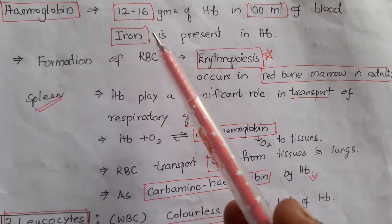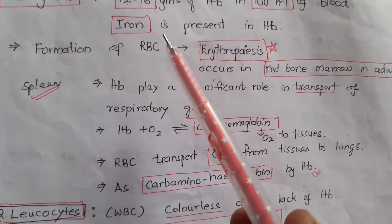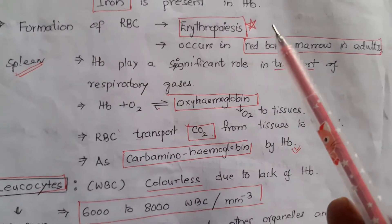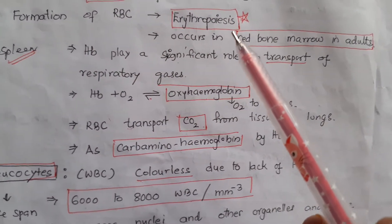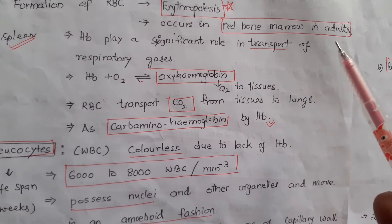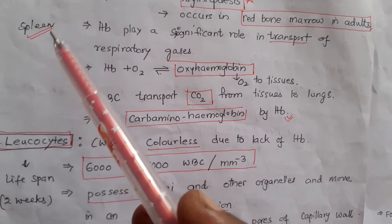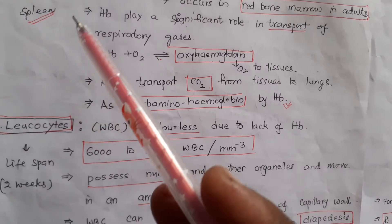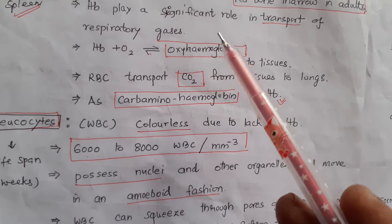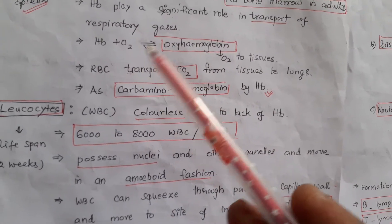Hemoglobin present in 100 ml of blood is 12 to 16 grams in the normal range. Iron is present in hemoglobin. Formation of RBCs is called erythropoiesis, which occurs in red bone marrow in adults. RBCs are destroyed in the spleen, which is called the graveyard of RBCs.